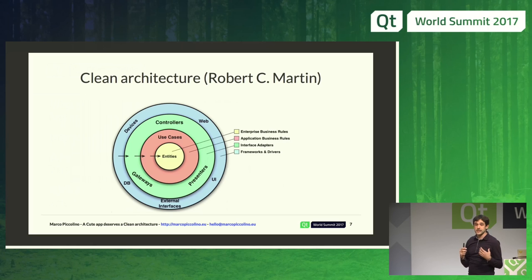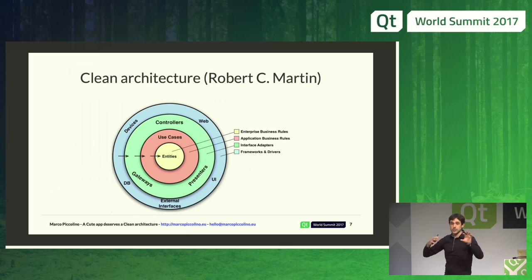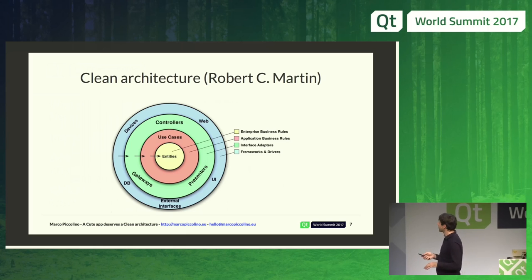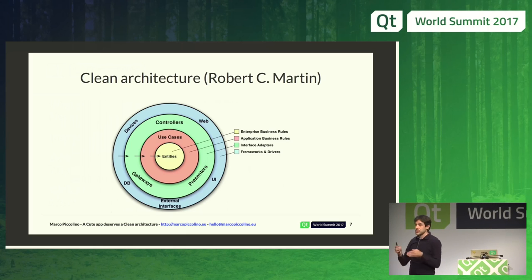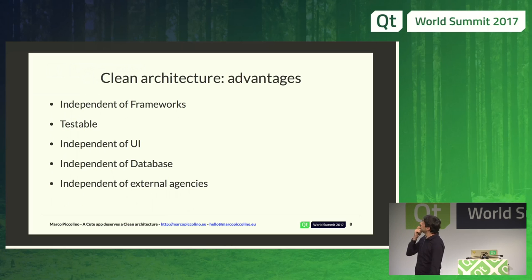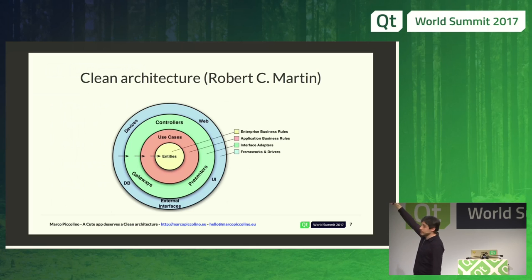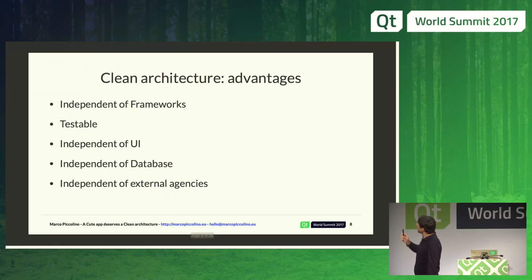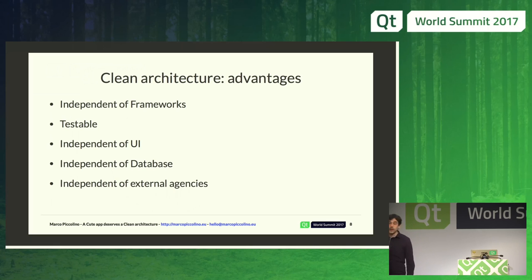Around your entities you have use cases — interactions between entities. For example, the user and the cash machine interact in a use case. Then you have gateways, controllers, and presenters as an interface layer with the outer world. The nice thing about this approach is that it is independent of frameworks, testable due to clear and well-defined layers, independent of the UI, independent of the database, and independent of any other external agency.